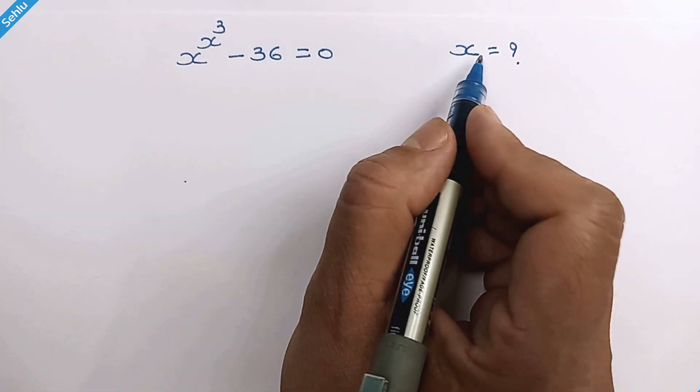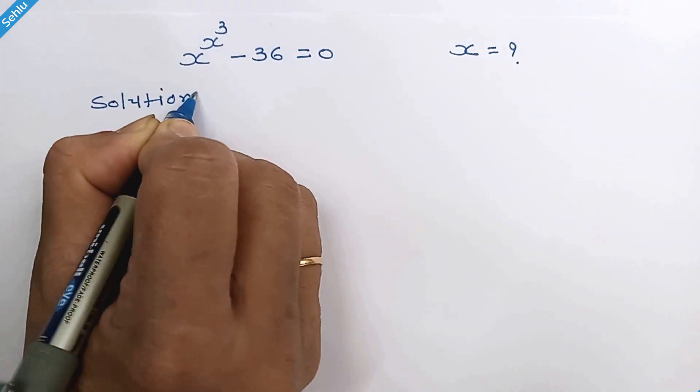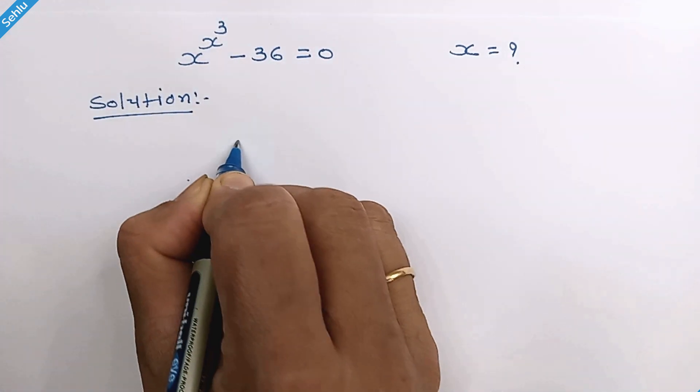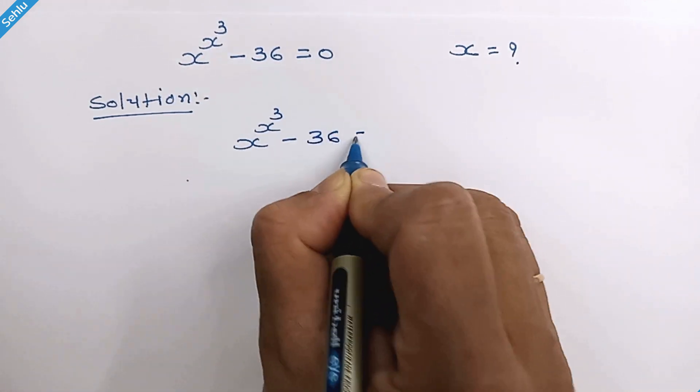Hello friends, let's find out the value of x. Our question is x raised to x cube minus 36 equals 0.